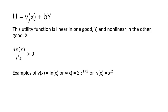Utility equals the function v plus b times y. This utility function is linear in one good — in this case y — and non-linear in the other good, in this case x. So this function v will increase with x as x increases. Here are some examples of this function v: it could be represented by the natural log of x, or two times the square root of x, or even x squared. All of these functions are non-linear in x.